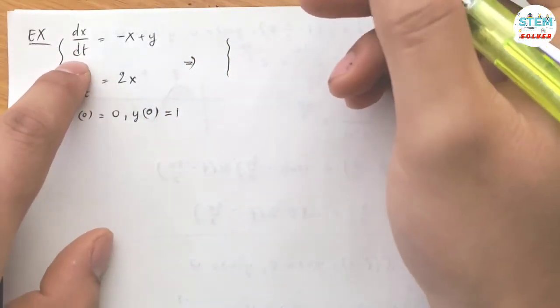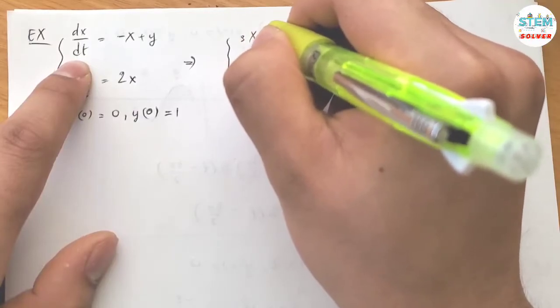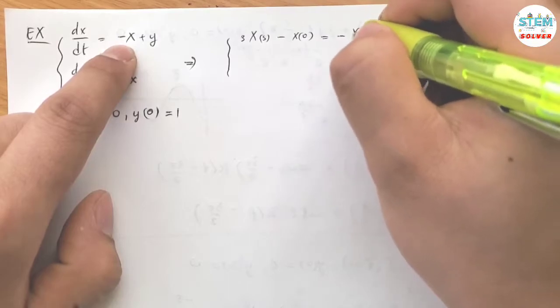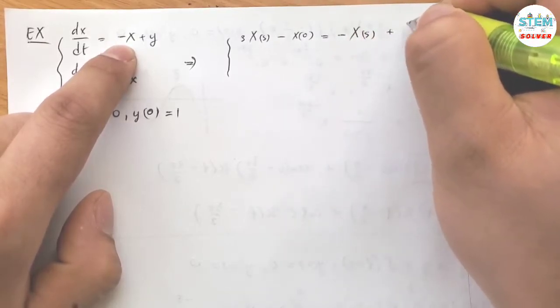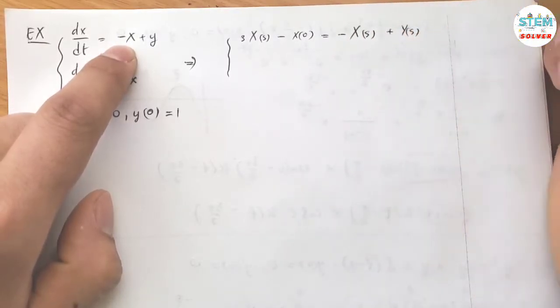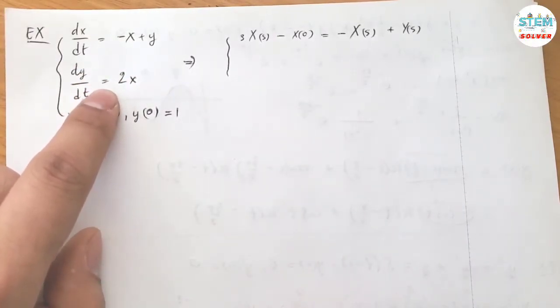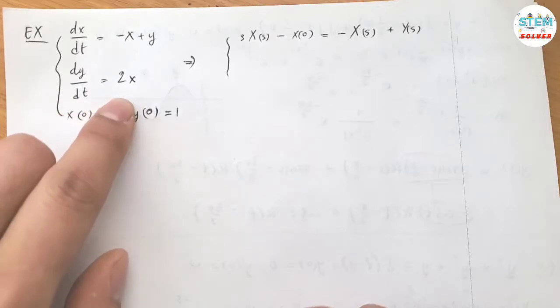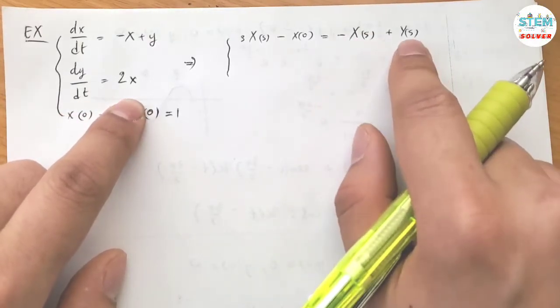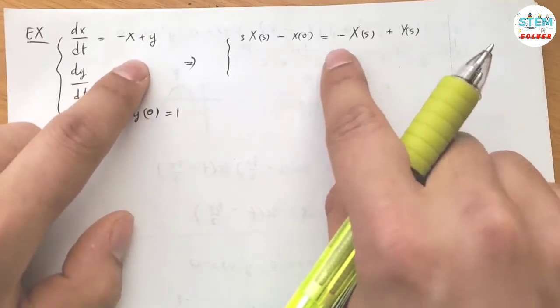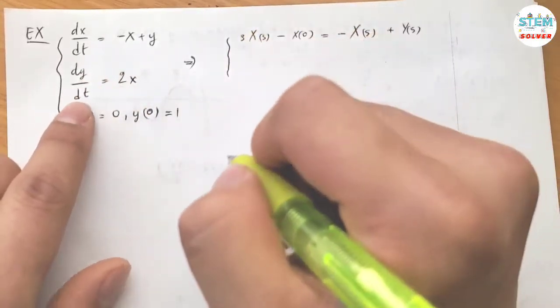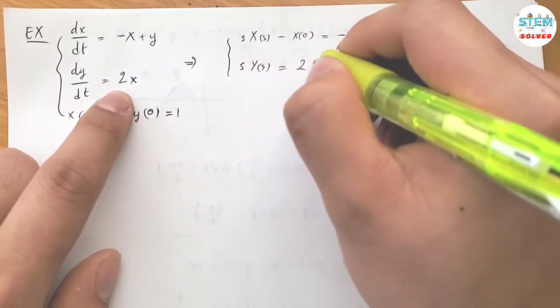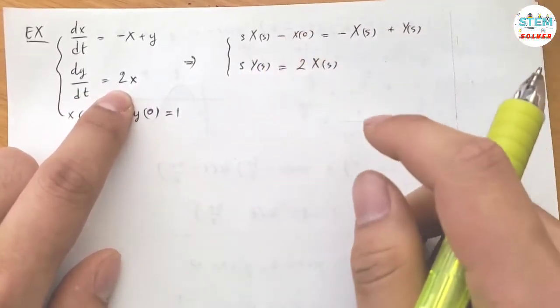So for this one, you are going to have S capital X of S minus X of 0 equals negative capital X of S plus capital Y of S. Because you are doing the system of linear equations, for x and y, you are going to apply the derivative theorem at the same time, which gives negative X of S and Y of S both in capitals. Down here, I have S capital Y of S equals capital X of S.